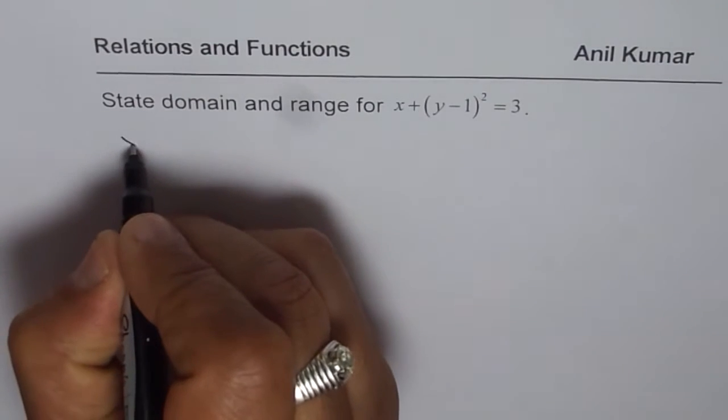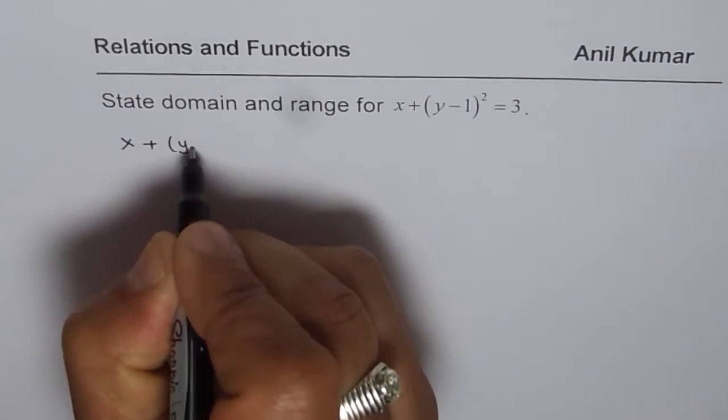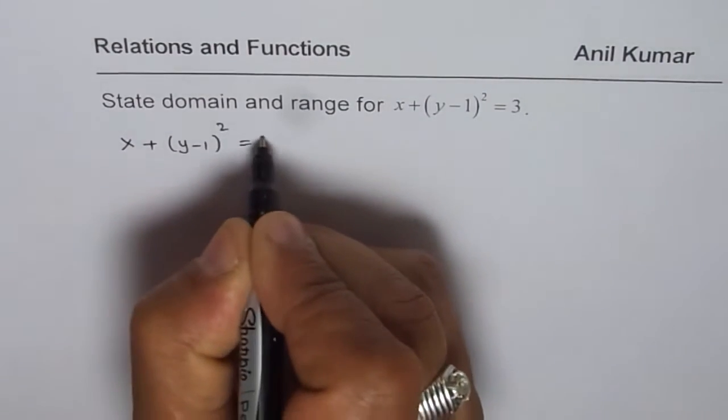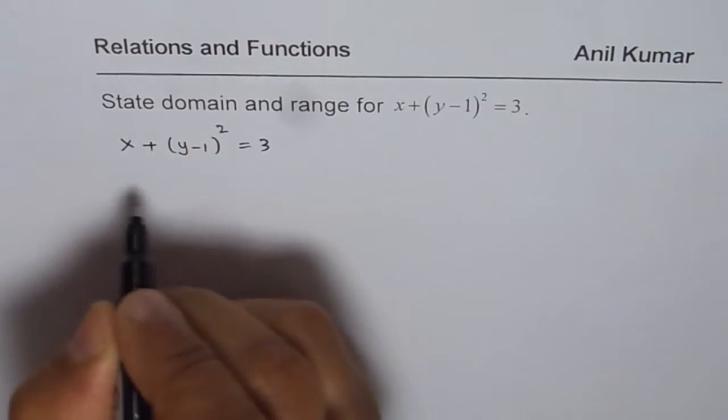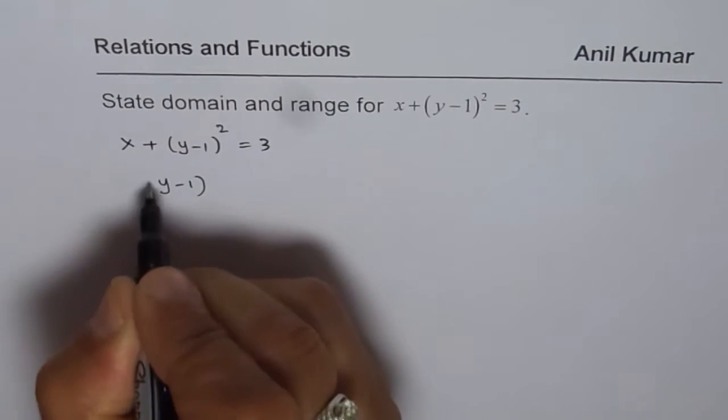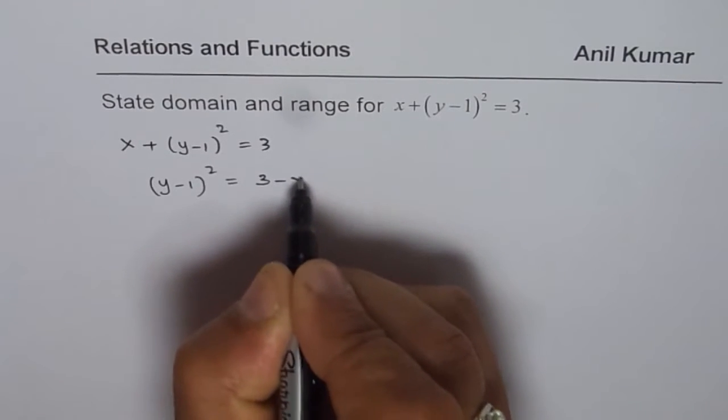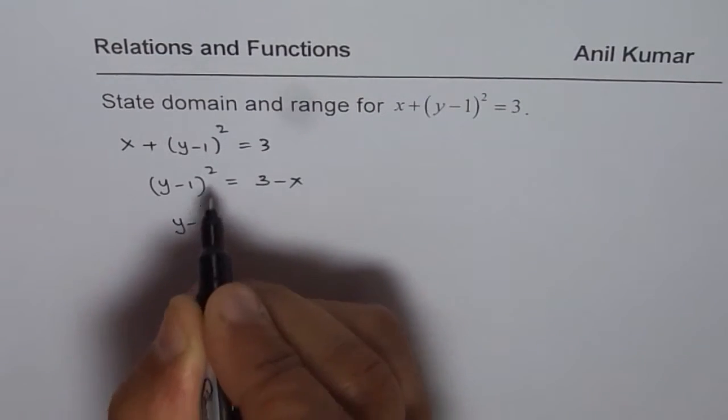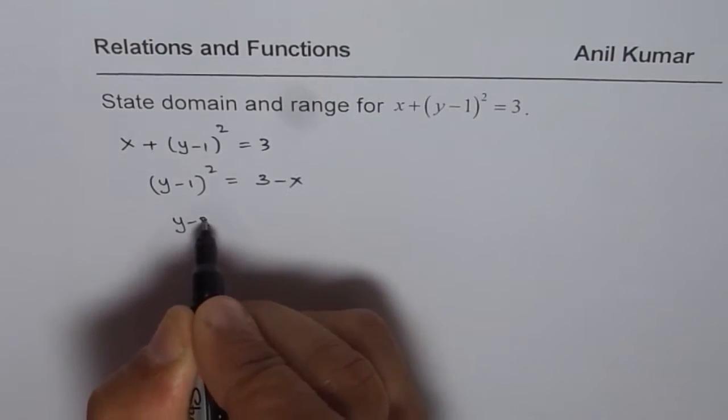We are given x plus y minus 1 whole squared equals to 3. Let us isolate y. First step should be y minus 1 whole squared equals to 3 minus x. And then we have to write square root.